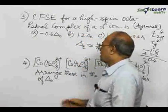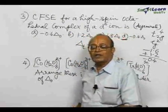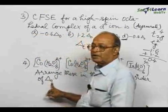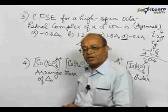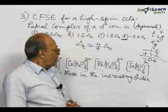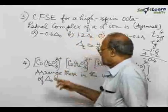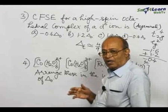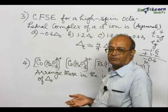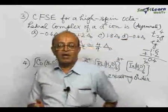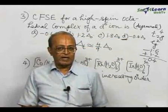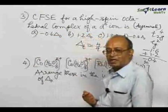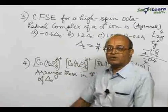Question number 4: I have given here 4 complex ions. This is also based on the delta O values. You can notice these 4 examples — all of them contain 6 ligands: water molecules. So all of them will have the octahedral geometry, but the question is: either you change the ligand or you change the central metal ion. As the case may be, delta O's magnitude will also change.